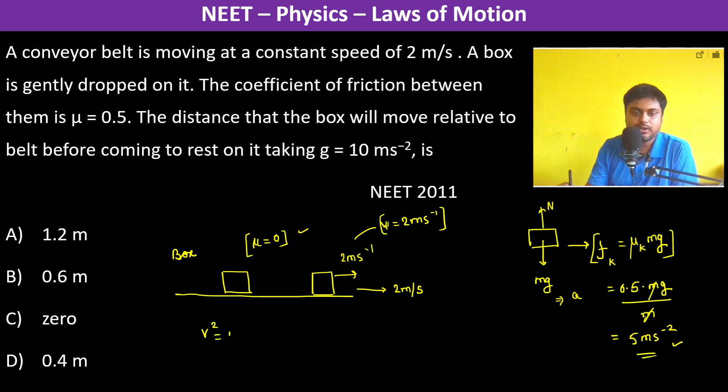Using the formula v² = u² + 2as, where final velocity is 2, initial velocity is 0, and a is 5: 2² = 0² + 2 × 5 × s. Therefore s = 0.4 meters, so the answer is D.